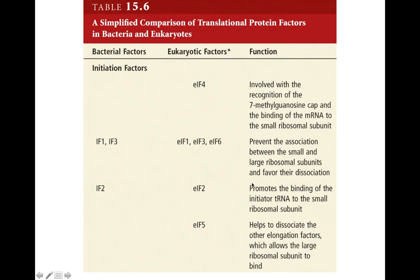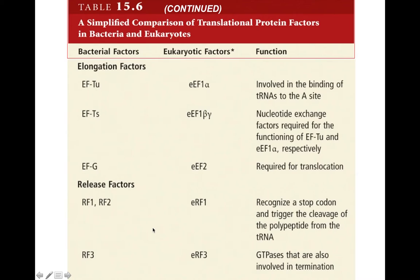There is a long list of initiation factors, elongation factors, and termination factors. All of the bacterial factors start with either the letter I, E, or R. When we talk about eukaryotic factors, we add a little 'e' at the beginning to indicate that these are eukaryotic. The bacterial ones were discovered first and later their counterparts in eukaryotes were found. So these are the elongation factors and we also have release factors.